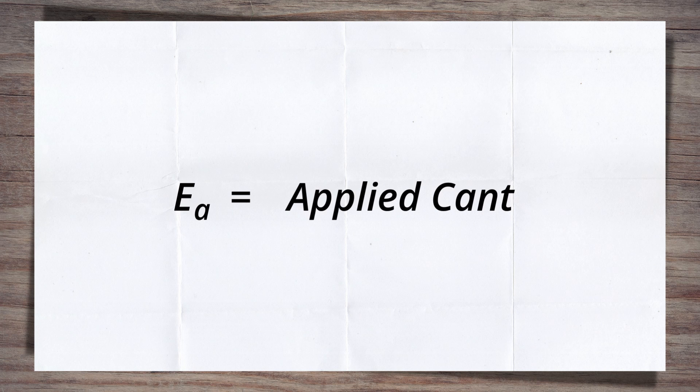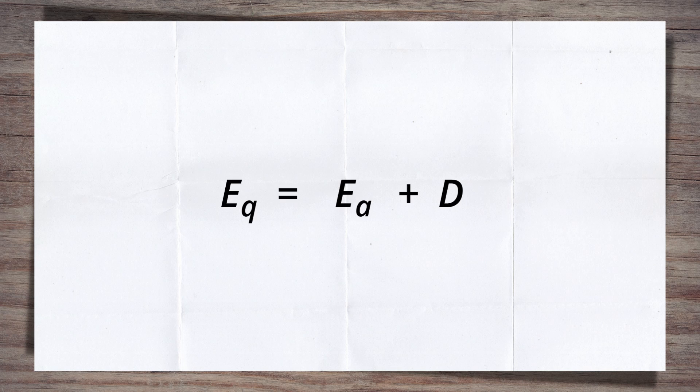The applied cant plus the cant deficiency, D, equals the equilibrium cant. So we can sub this into our equation.